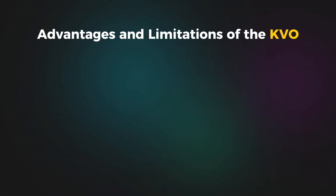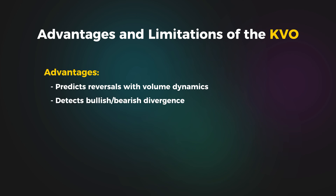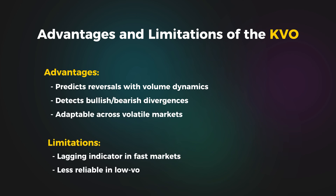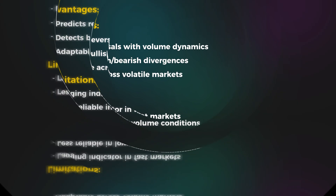The Klinger Volume Oscillator is a robust tool for predicting reversals, but it's essential to combine it with other indicators to minimize false signals, especially in low-volume markets.